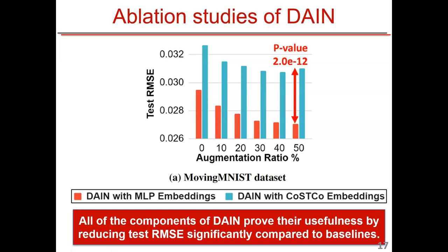We also conducted ablation studies to validate each design choice across the four steps. For step one, we use MLP architecture over CoSTCo embeddings because it yields lower test RMSE. Our ablation studies prove that all major components of DANE are effective in terms of test RMSE, confirming we made the right choice at each step. Additional ablation results are provided in the appendix.